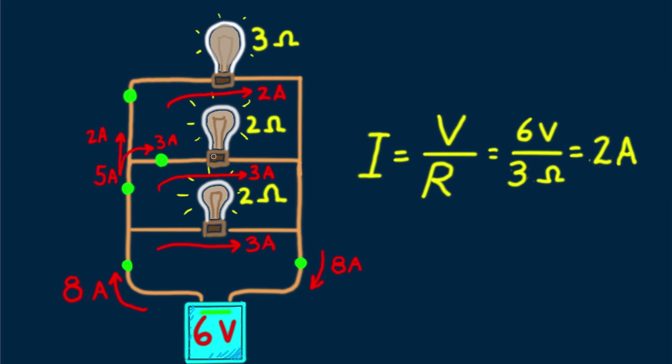Although current is established instantaneously in all parts of the circuit, we can think of 8 amps of electrons leaving one battery terminal, and 8 amps returning to the opposite battery terminal, as I've indicated. All tuckered out, ready to be re-energized by chemical reactions in the battery.